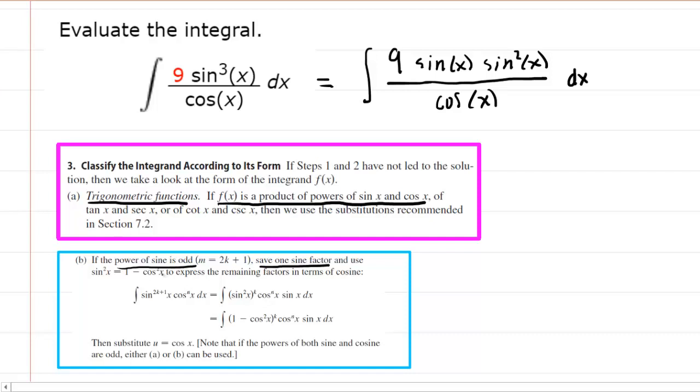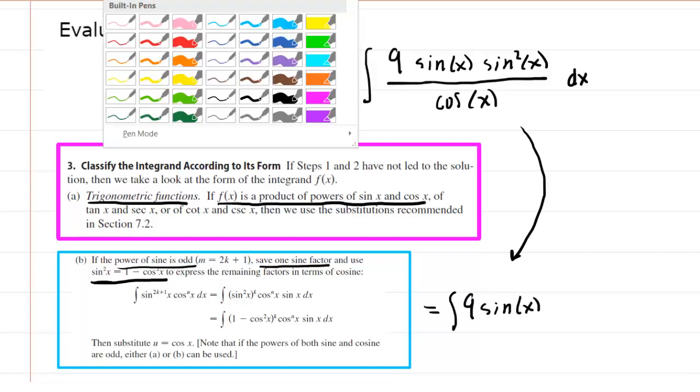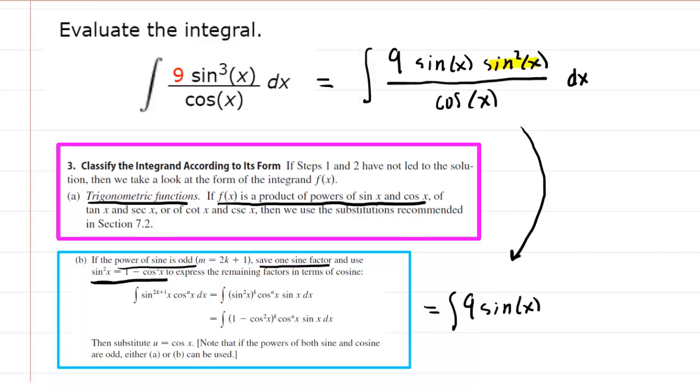As we read on, it then requests that we use an identity. It says that the sin²(x) is equal to 1 - cos²(x). So why don't we come down here. We'll rewrite the integrand, but we're going to apply that trigonometric identity. So this sin²(x) right here is going to be rewritten as 1 - cos²(x).